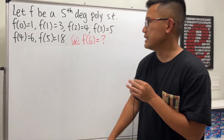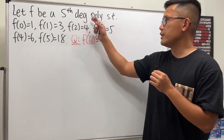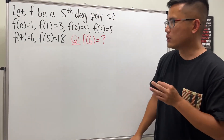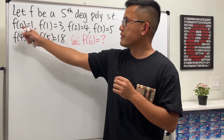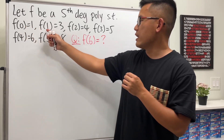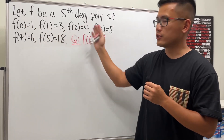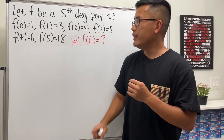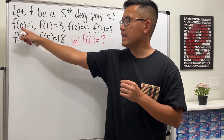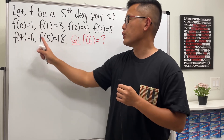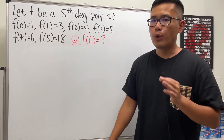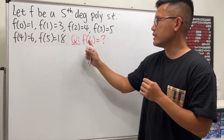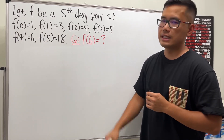Okay, here I have a question for you guys. Let f be a fifth-degree polynomial so that f(0) = 1 and f(1) = 3, and so on. Notice that we have the x value going from 0 to 5, and our goal is to find out what's the value for f(6).